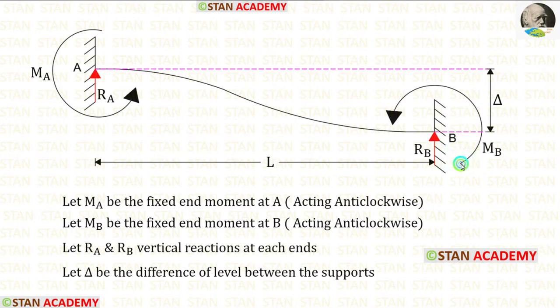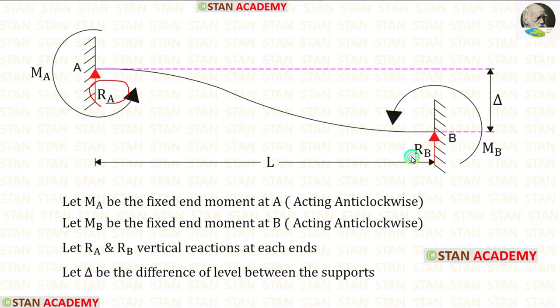let us assume that MB is also acting in the anticlockwise direction. RA and RB are the vertical reactions. Let us keep delta as the difference of level between the supports.